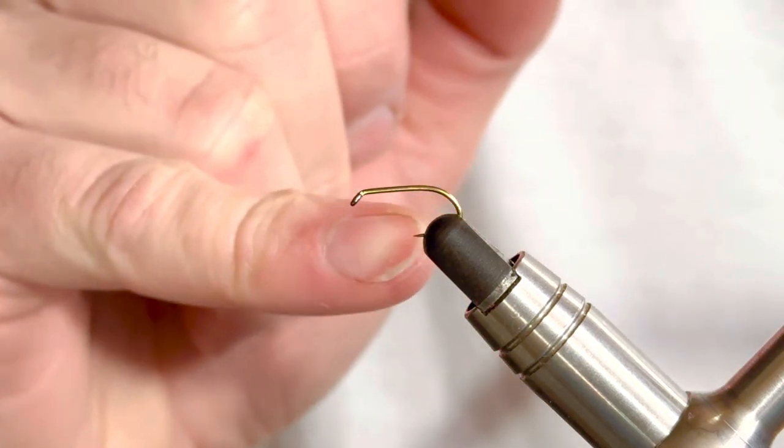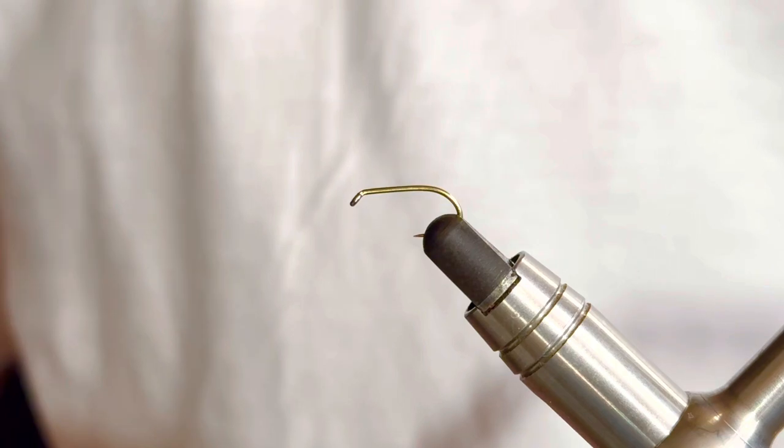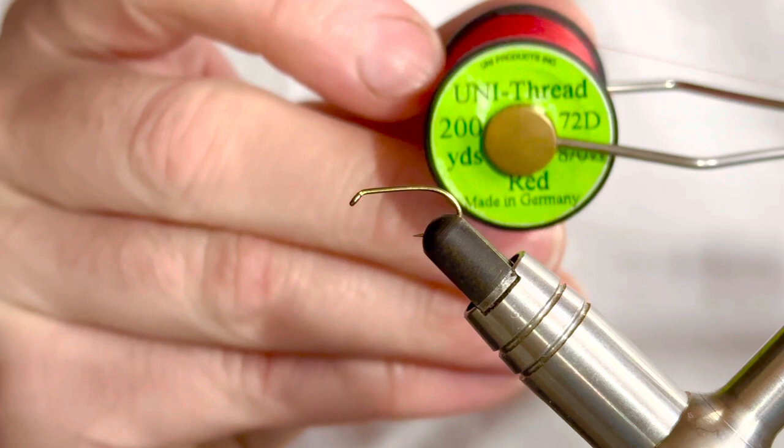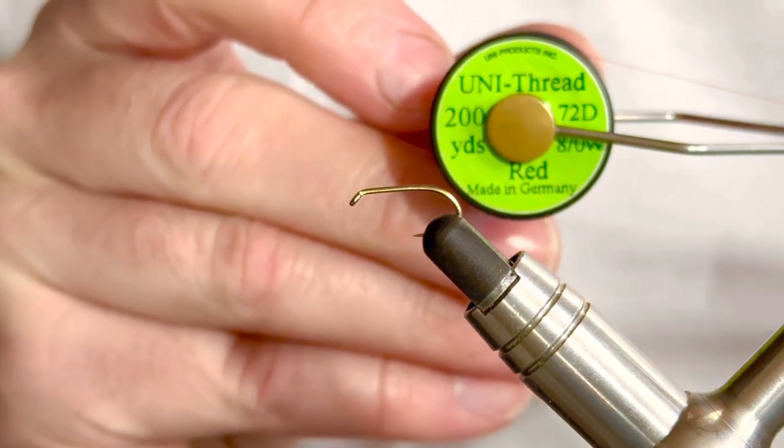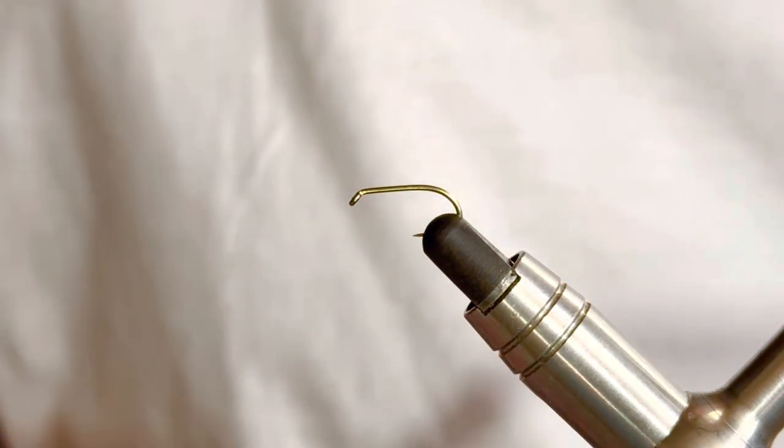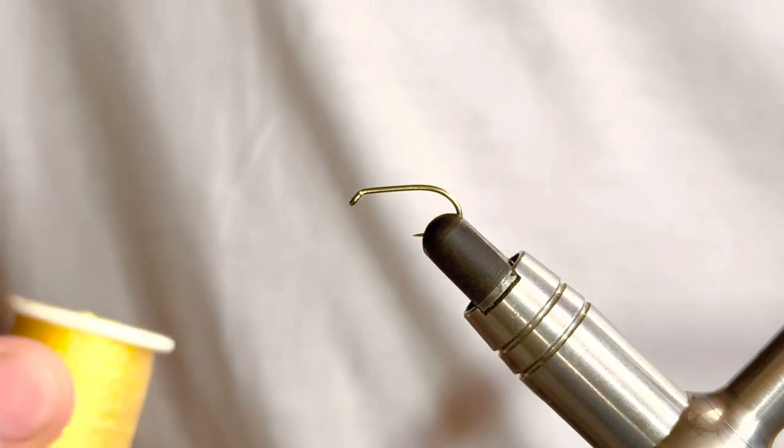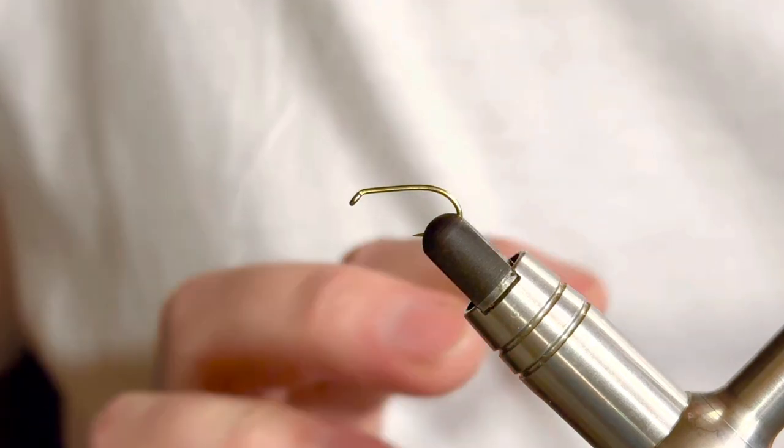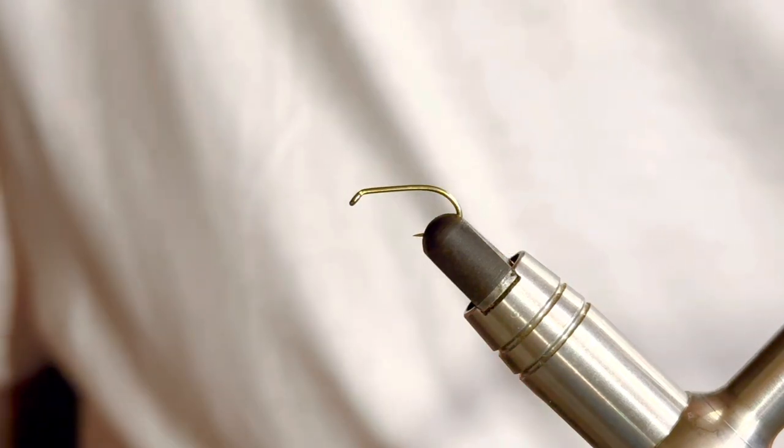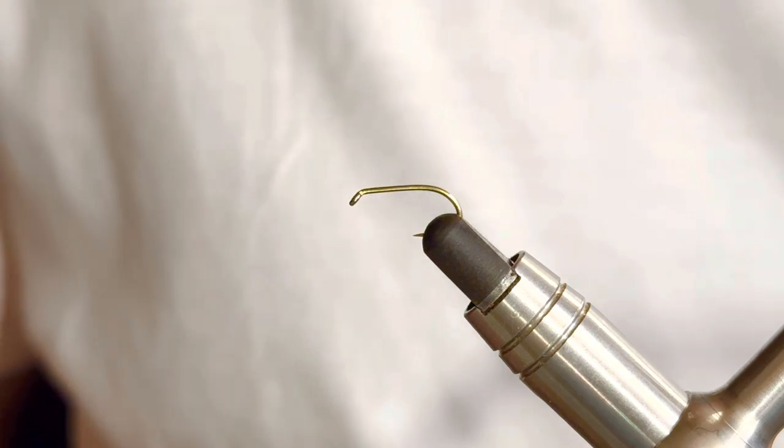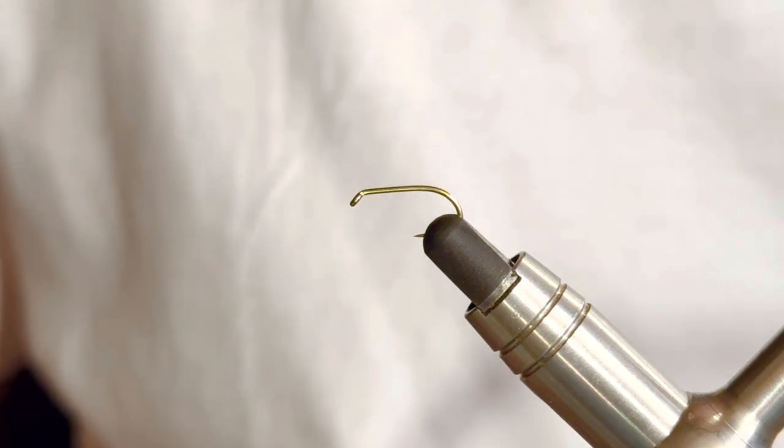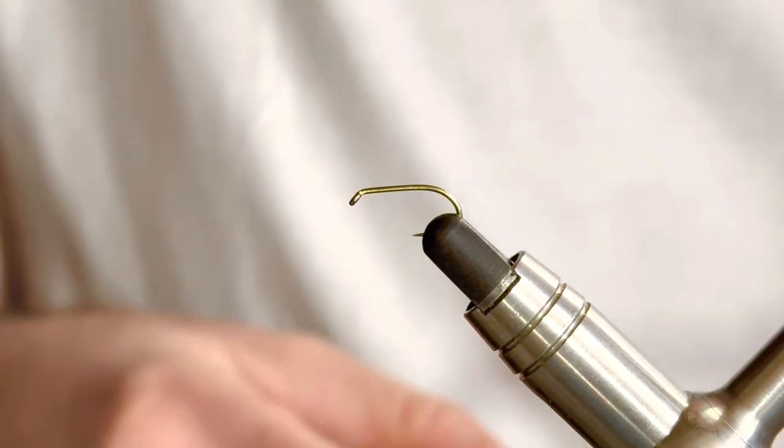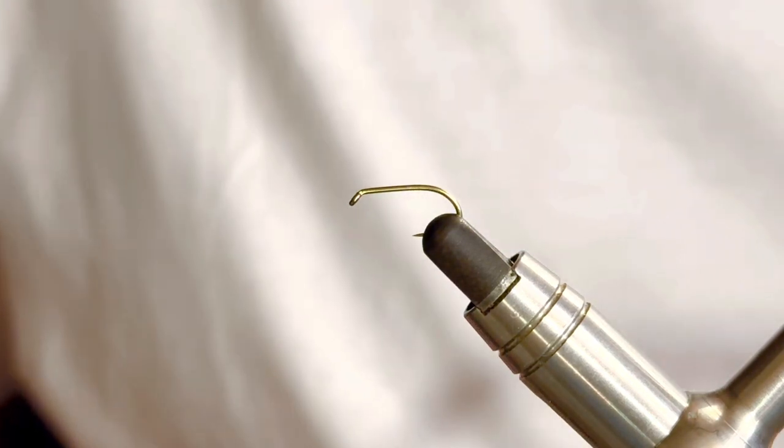We're going to start in the vise with a B175 in a size 12. The thread we'll be using is the Uni-thread 8-ought in red. For the rib I'm going to be using a Veniard micro glint, and we've got a partridge feather for the hackle. For the dubbing I've got some natural hare's ear and some brown hare's ear with a little bit of UV flash to it. We'll combine those two to create the dubbing for this fly.